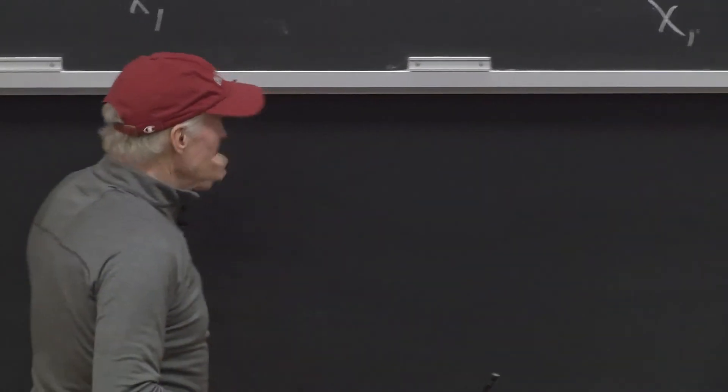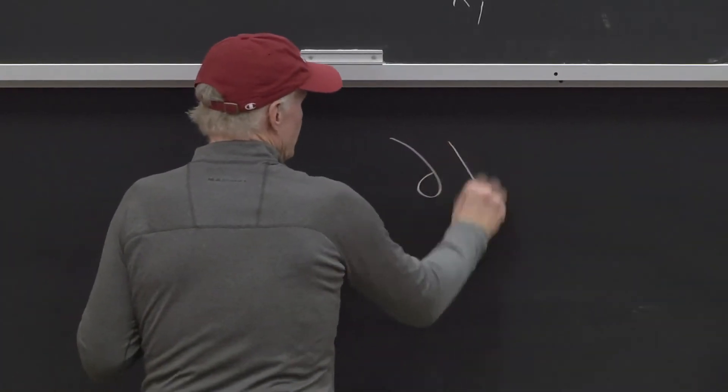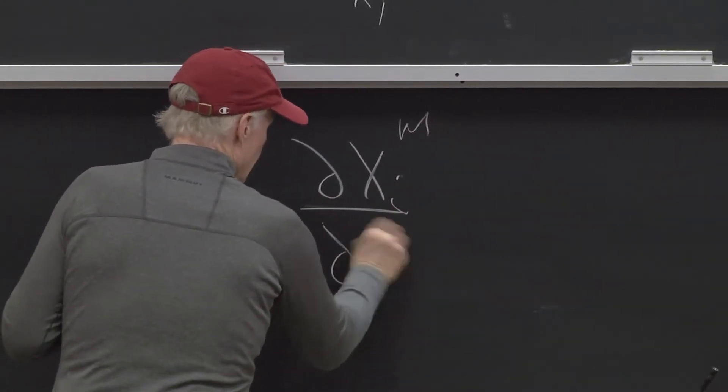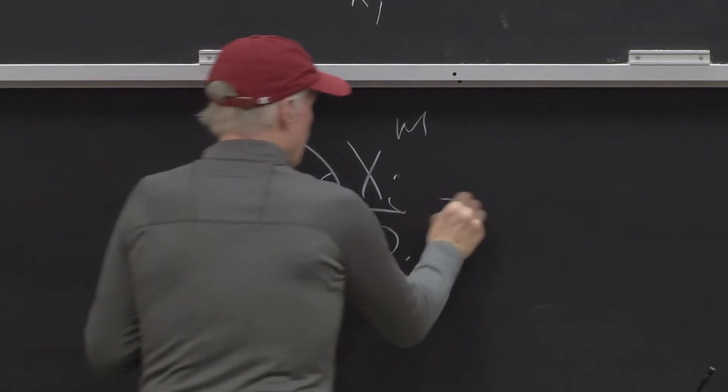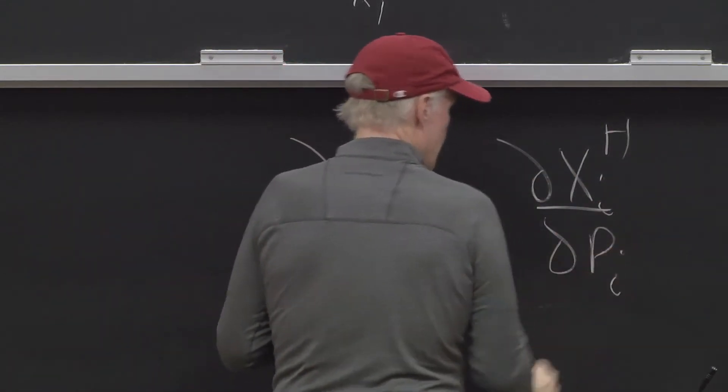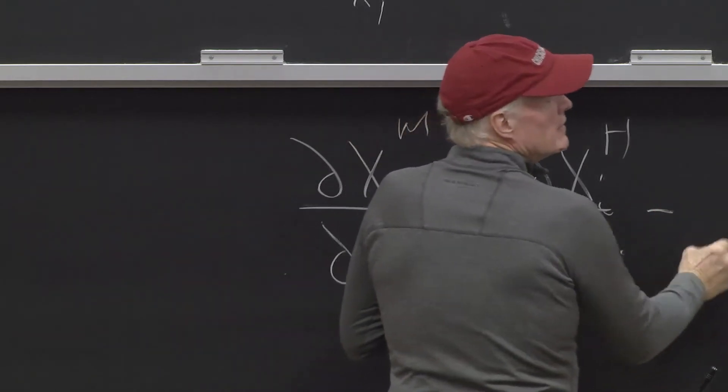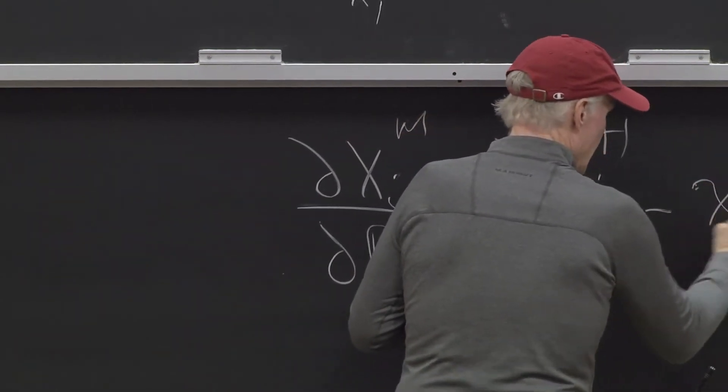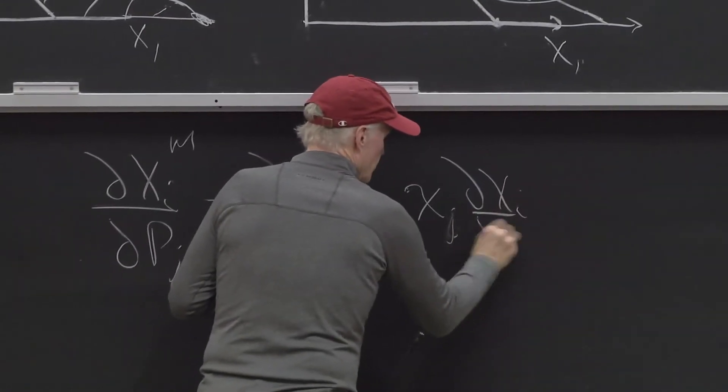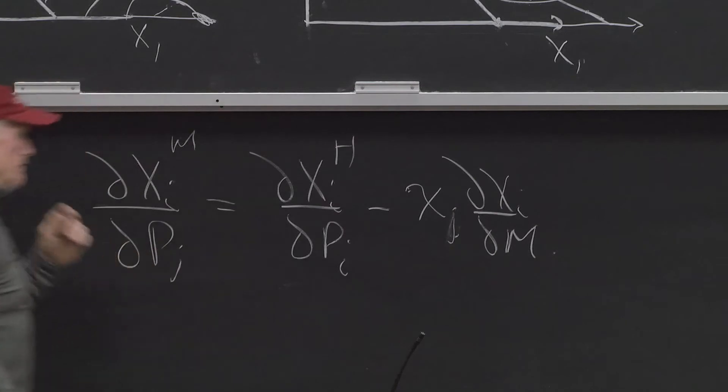If you wanted to take the Slutsky equation at the individual level, it can be written like this. Let me try to go from the individual level Slutsky equation to an aggregate Slutsky equation. I want to aggregate this up.